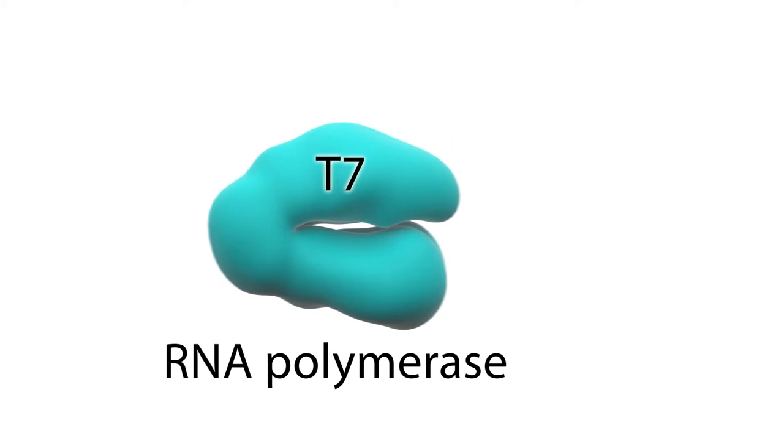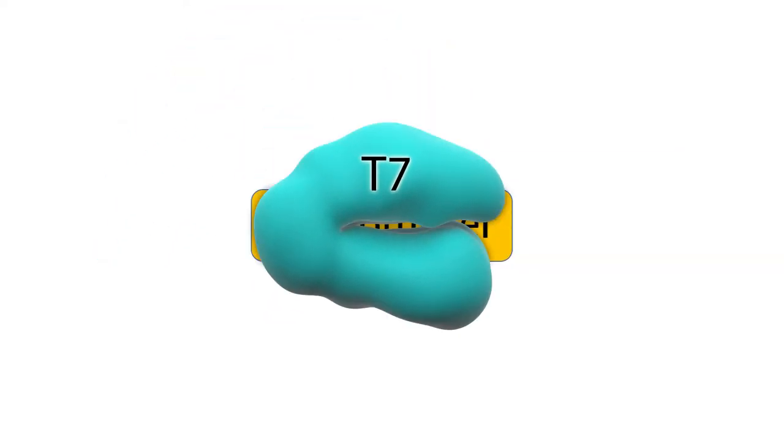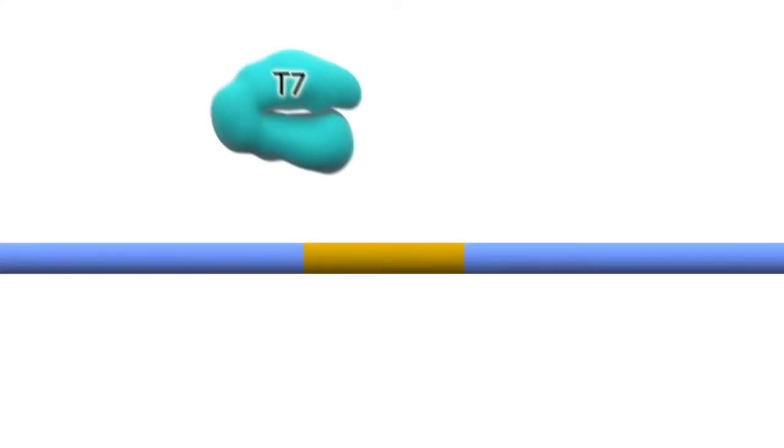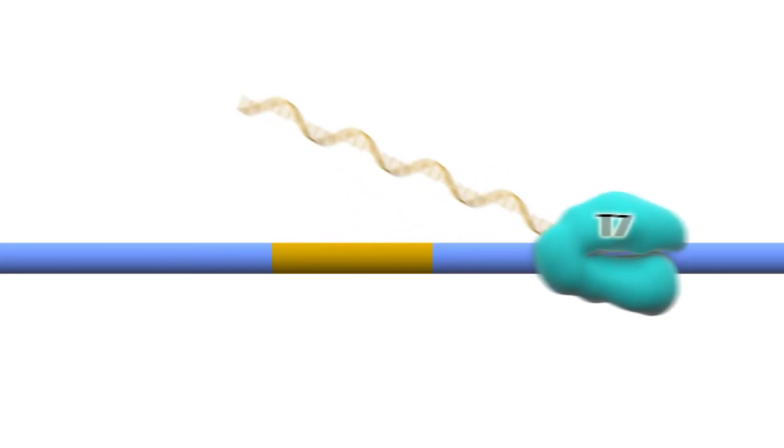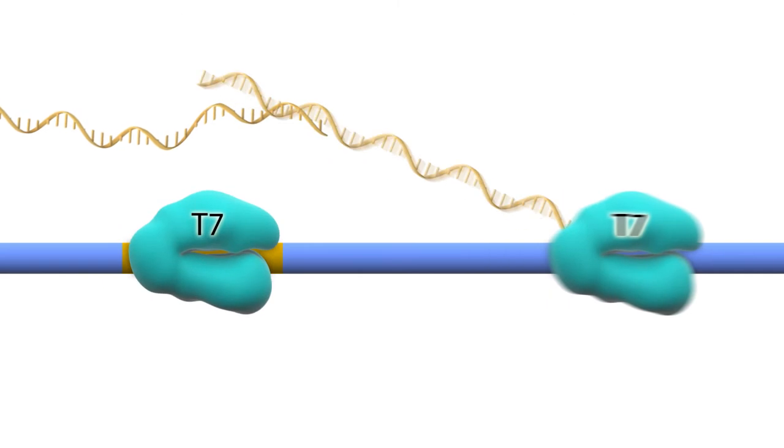This viral polymerase only binds to its associated T7 promoter. By inserting the T7 promoter into a plasmid and producing many copies of the T7 RNA polymerase, researchers are able to generate lots of RNA encoding the target protein of interest.